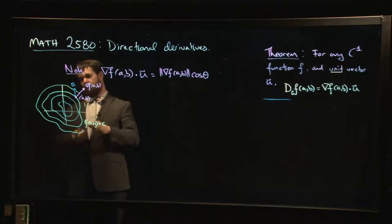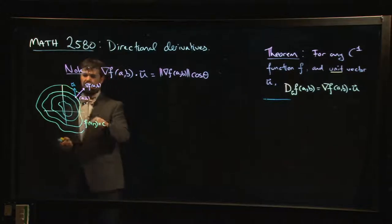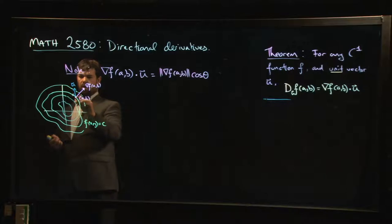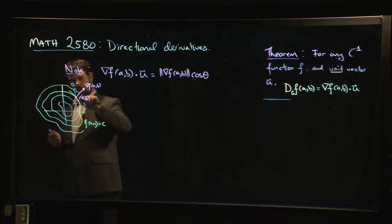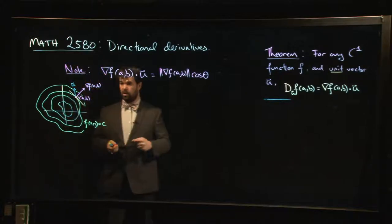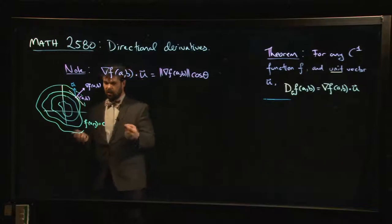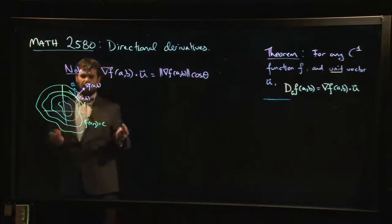And if you are at a certain point and you want to move off in some direction, and maybe the next level curve is maybe somewhere like that, and so you want to know the rate of change. Well, if you think in terms of elevation maps, you can think, okay, if I go in this direction, I'm not moving in the direction of the gradient.